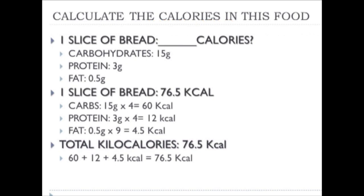Here are some calculations using this information. If a patient had a slice of bread with 15 grams of carbohydrate, 3 grams of protein, and 0.5 grams of fat, we can determine total calories: 15 grams × 4 = 60 carbohydrate calories; 3 grams × 4 = 12 protein calories; 0.5 grams × 9 = 4.5 fat calories. Adding them up: 60 + 12 + 4.5 = 76.5 calories total in that slice of bread.